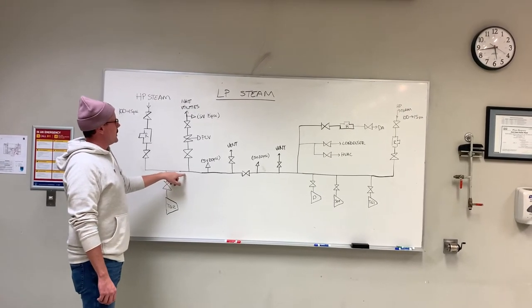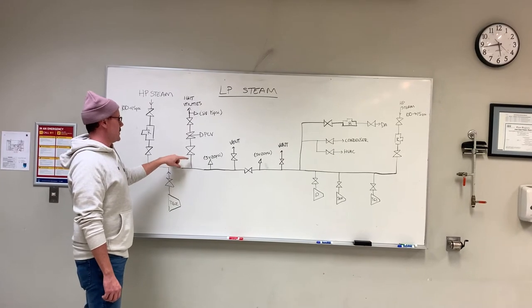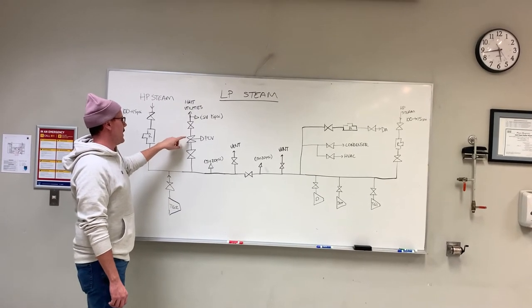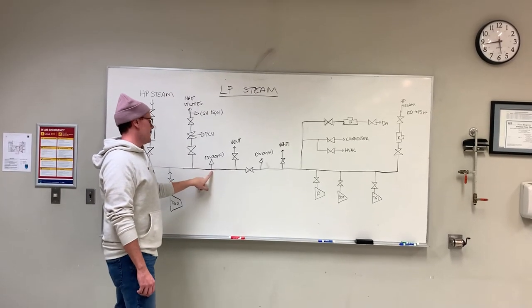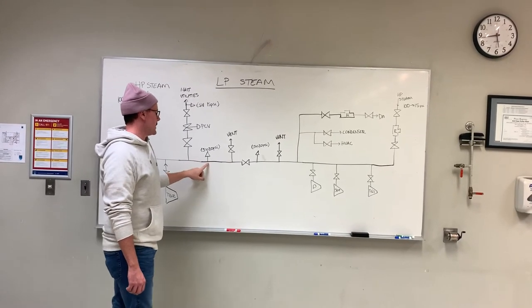We flow over here to the Nate Utilities. It goes through a pressure control valve and has a safety valve on this line before it heads out. We also have another safety valve on the main header that's set to 20 psi.